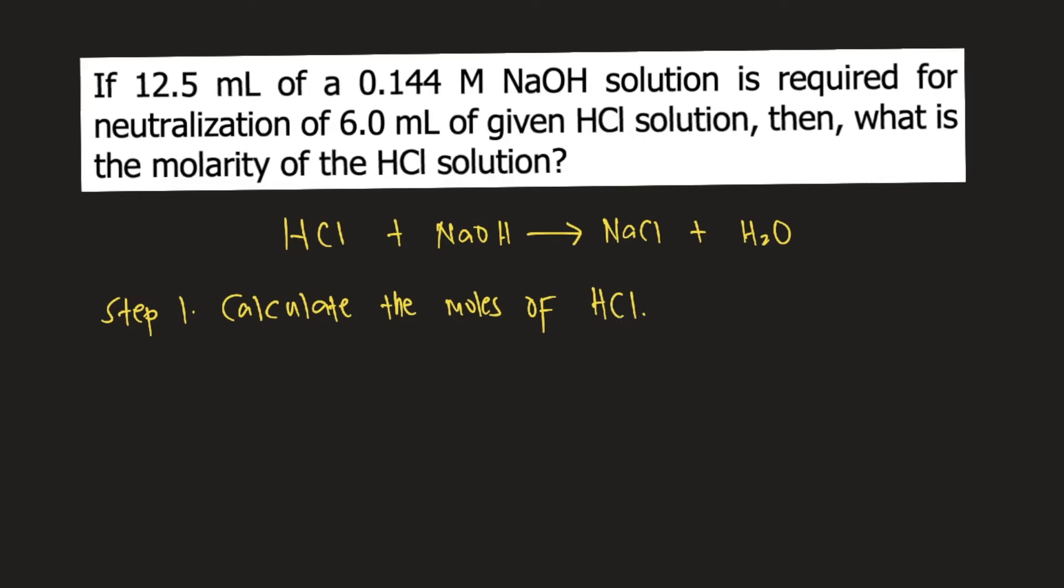So how do we do this? If you read the problem, we are initially given 12.5 mL of a 0.144 molar NaOH. So starting from 12.5 mL, you need to convert this first to liters. We know that one liter is equivalent to 1,000 mL, so mL would cancel.